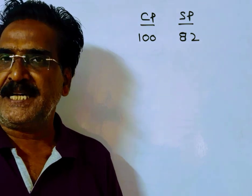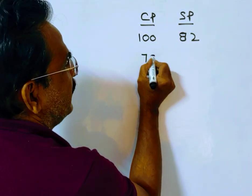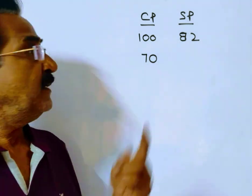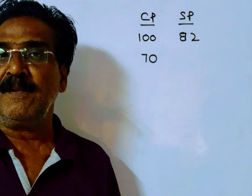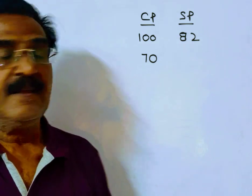Now if the cost price is decreased by 30%, the new cost price is 70. And the selling price is increased by Rs. 144, then he gets a profit of 20%.